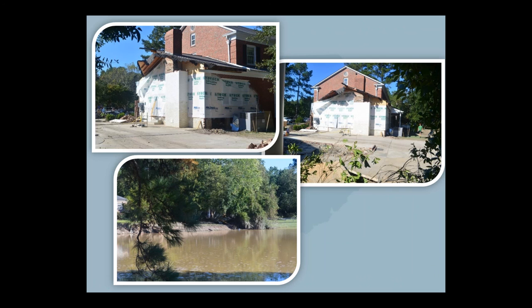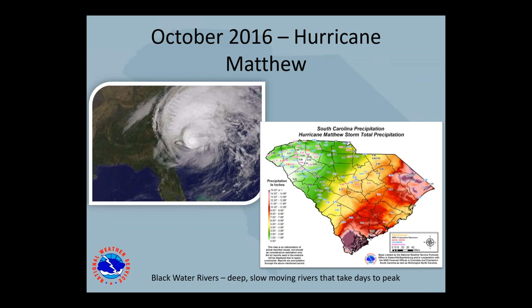Then in October of 2016, Hurricane Matthew impacted the state. As it began to fall apart moving through South Carolina, it dumped a large amount of rain over the Pee Dee region of South Carolina and eastern North Carolina. Quite a few blackwater rivers are present in this area, and these rivers take days to peak. It's also a complex river system with the ability to create backwater along some rivers. Additionally, as water was moving downstream toward Winyah Bay and the ocean, king tides rolled in, adding another impediment to the relief of flooded areas.